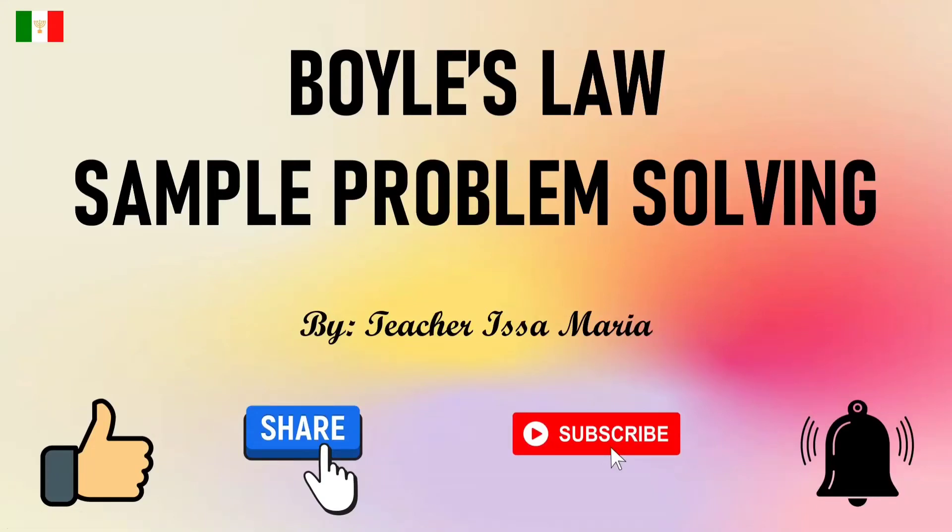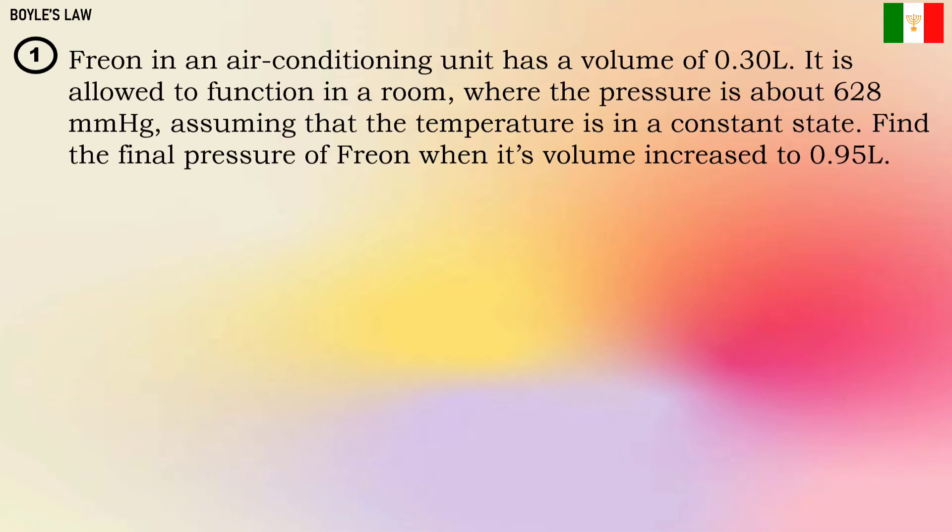Boyle's Law Sample Problem Solving. Number 1: Freon in an air conditioning unit has a volume of 0.30 liter. It is allowed to function in a room where the pressure is about 628 mmHg, assuming that the temperature is in a constant state. Find the final pressure of Freon when its volume increased to 0.95 liter.